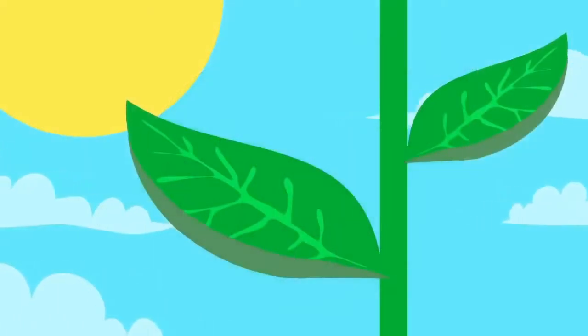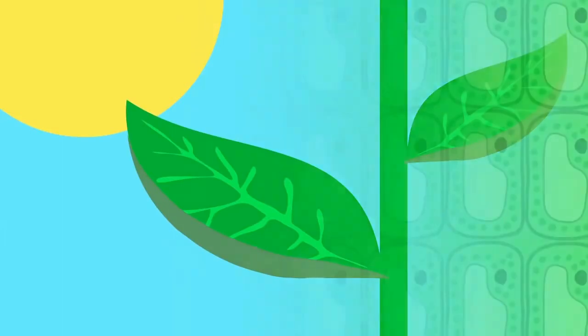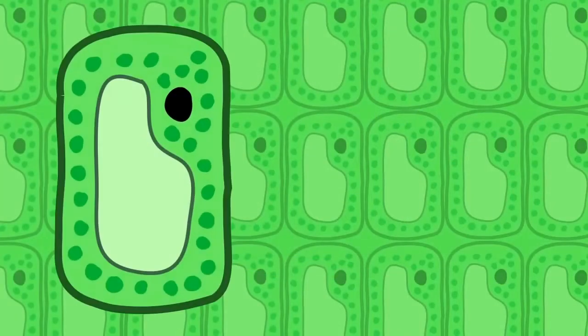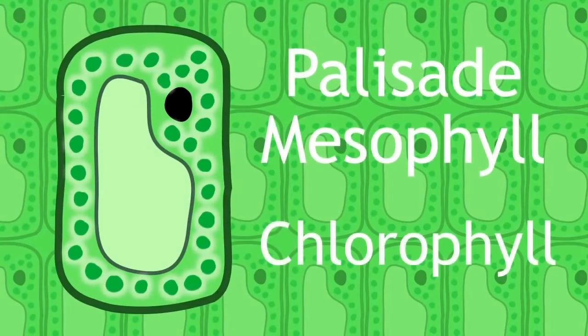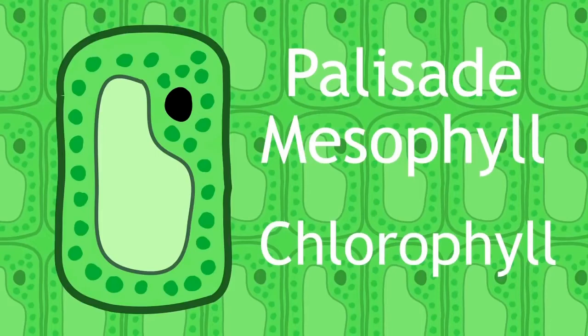Let's start with sunlight. Have a look at a leaf. The top of it is exposed to the most light, so the cells specialized for trapping light are on top. These cells are called palisade mesophyll, and they're packed full of chlorophyll, the green chemical that plants use to absorb light. That's why the top side of the leaf is darker than the bottom side.